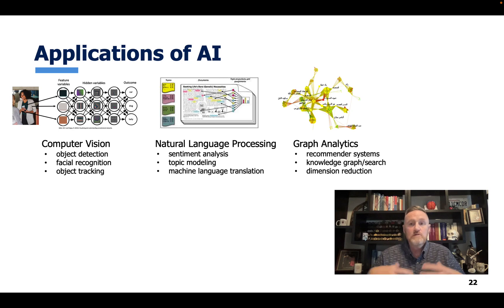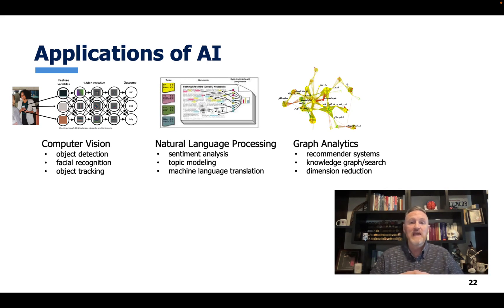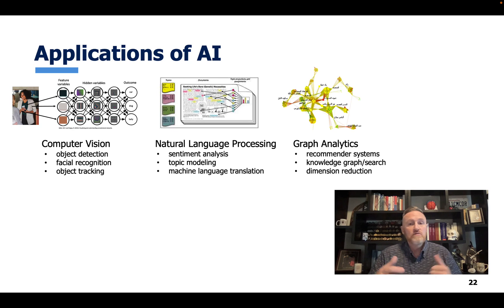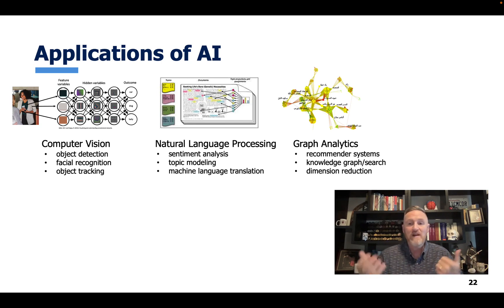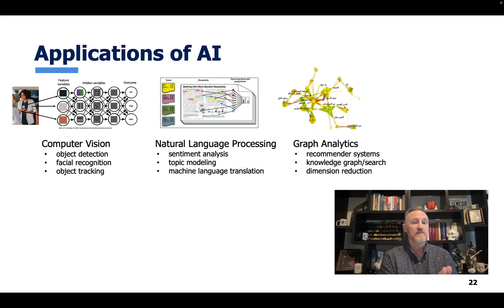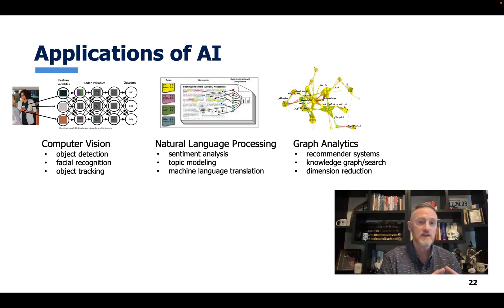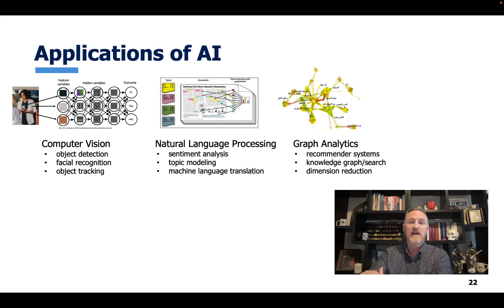Graph analytics deals with relationships when data is related in some way. A lot of times this involves recommender systems — when social media recommends a new friend or Amazon recommends a product, that AI is driven by graph analytics. It's also used for knowledge search, like Google recommending web pages. It can also be applied to NLP and computer vision for dimension reduction, reducing the computational complexity of those tasks.